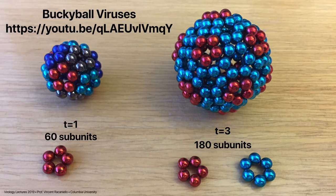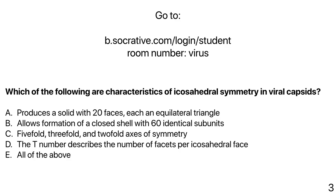Question: which of the following are characteristics of icosahedral symmetry in viral capsids? A, produces a solid with 20 faces each an equilateral triangle; B, allows formation of a closed shell with 60 identical subunits; C, there are 5-, 3-, and 2-fold axes of symmetry; D, T number describes the number of facets per icosahedral face; E, all of the above. The answer is E — all of the above — and 85% of you got that. Each of those is a definition I gave you for icosahedral symmetry.